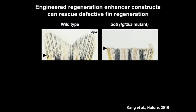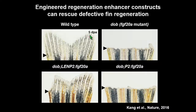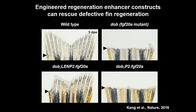FGF signaling is very important for fin regeneration. Mutation in FGF-20A blocks fin regeneration, as you see here. DOV is the name of the FGF-20A mutant. We engineered LAN with FGF-20A and generated a stable line in the DOV background. As you see here, the LAN-P2-FGF-20A very small transgenic construct can rescue the DOV mutant background. The LAN-P2-FGF-20A fish regenerate the fin with a very well-patterned fin structure, indicating that LAN can drive FGF-20A expression enough to rescue the DOV mutant phenotype. Moreover, this fish did not show any detrimental effects such as overgrowth phenotype, indicating that LAN activity is precisely controlled during regeneration.